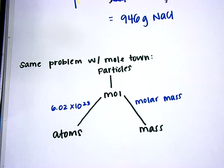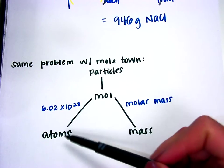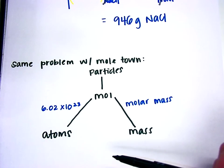I'm going to show you how to do that problem using MoleTown. Remember that if you are going into town, you divide, and if you're going out of town, you multiply. Like I said earlier, I don't want you to do your work this way. I want to see the chart like this, but this is a great way to double check and make sure you're doing things correctly.